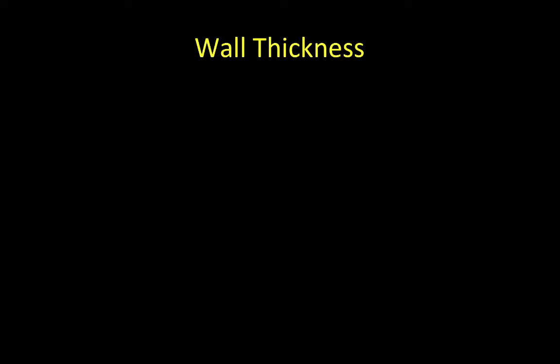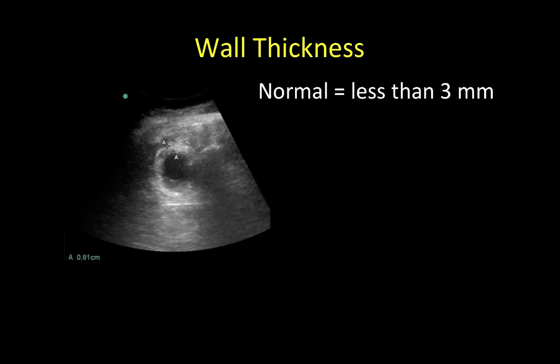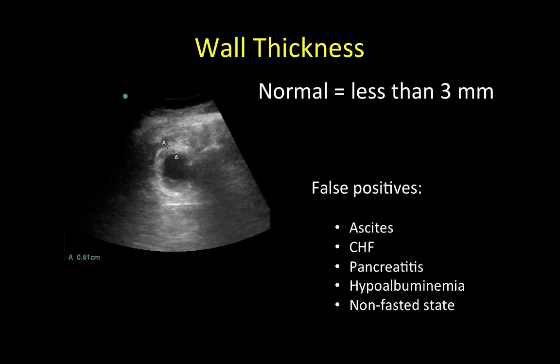The gallbladder wall is considered normal if it is less than three millimeters thick. Wall thickness greater than three millimeters is most commonly due to cholecystitis. However, false positives for a thickened gallbladder wall include ascites, congestive heart failure, pancreatitis, hypoalbuminemia, and a non-fasted state where the gallbladder will contract and wall thickness is not as reliable. It is important to measure wall thickness at the most anterior portion of the gallbladder when possible, because acoustic enhancement at the posterior wall may result in falsely elevated values.